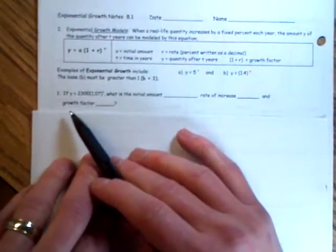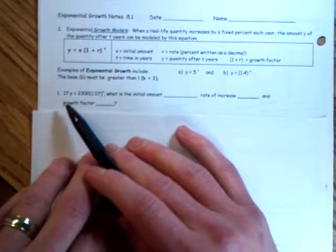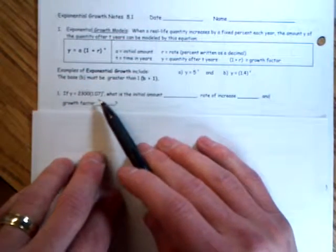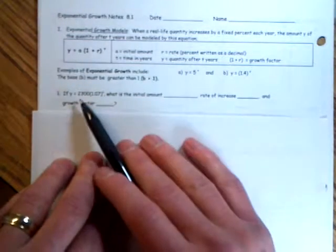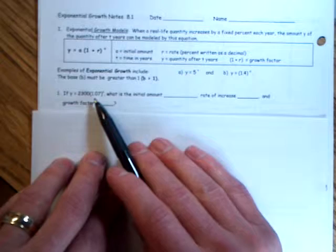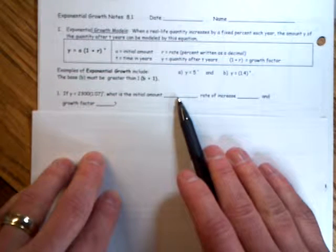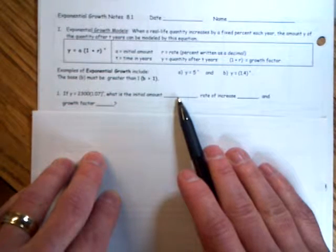Now here's an opportunity to fill in some blanks. It says if y equals 2,300 times 1.07 raised to the t, what is the initial amount? Well, the initial amount is the coefficient before what's in the parentheses. So please fill in 2,300 in this blank space.